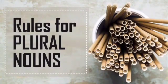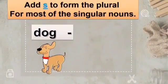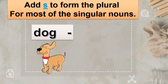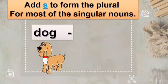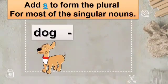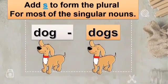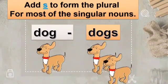Here are some rules to change a singular noun into a plural noun. Rule number 1: for most singular nouns, we add S to make them plural. As you can see in the picture, one dog is called dog because it is singular. When we change it to plural, we add S and it becomes dogs. One dog, two dogs.